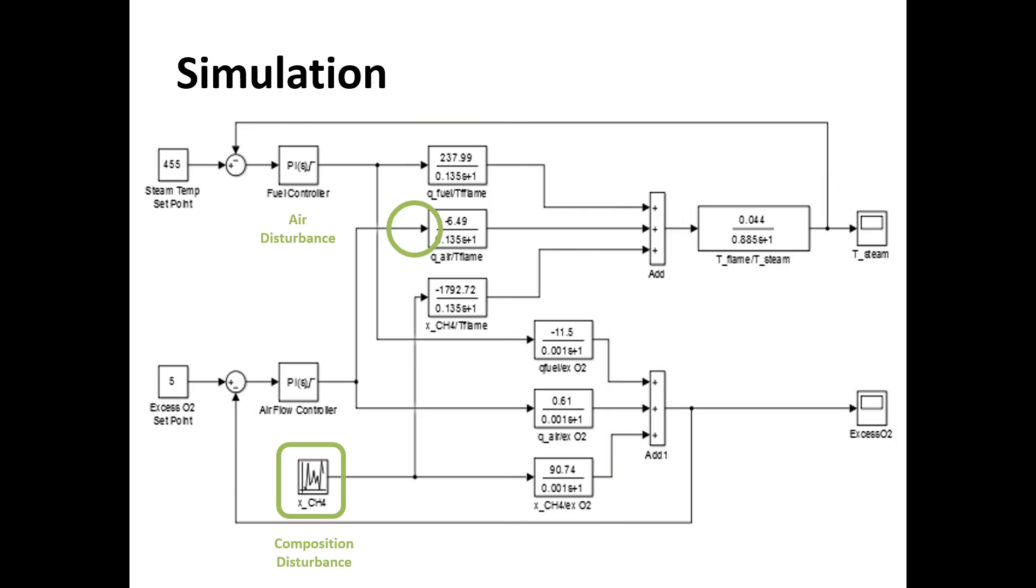Here you'll notice the disturbance in the fuel composition which feeds into both loops, the steam temperature and the excess O2.